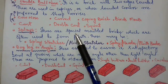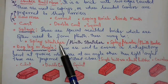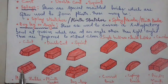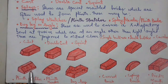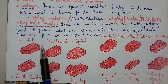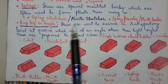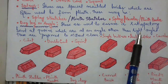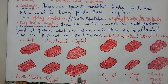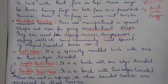Another term is splay bricks. These are special molded bricks which are often used to form plinth. These may be a splay stretcher or splay header. As you can see in this figure, the stretcher of this brick is splayed, so it is known as a splay stretcher. If the header of the brick is splayed, you can call it a splay header. These are used to form plinth. Another term is dog leg or angle bricks — these are used to ensure a satisfactory bond at quoins which are at an angle other than right angle. These bricks are preferred over mitered closer as they have great bonding properties.